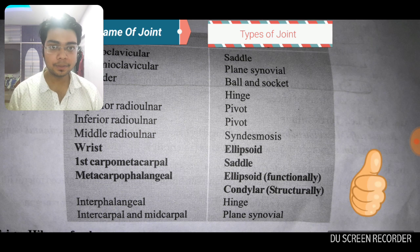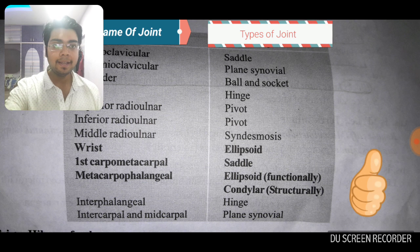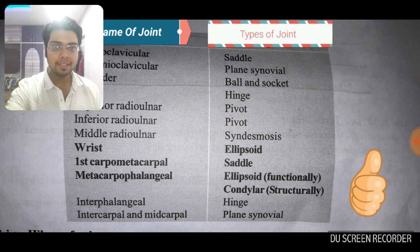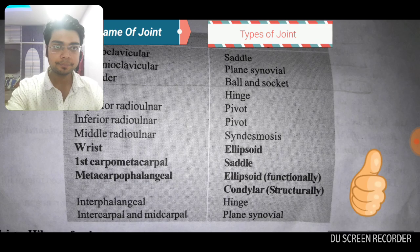The wrist joint is ellipsoidal. The metacarpophalangeal joint is ellipsoidal functionally and condylar structurally. The interphalangeal joint, between the phalanges, is a hinge joint. Intercarpal and midcarpal joints are plain synovial joints.